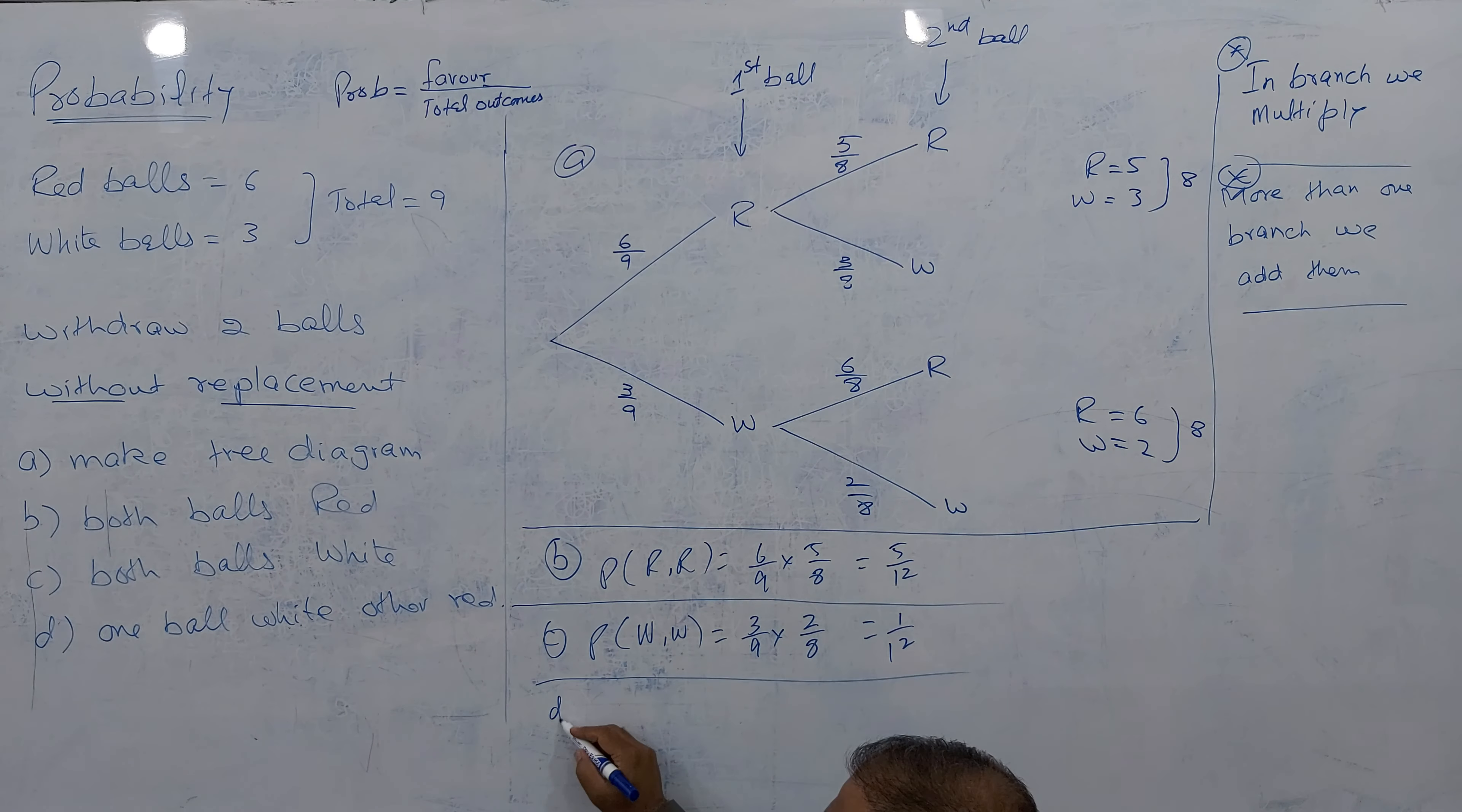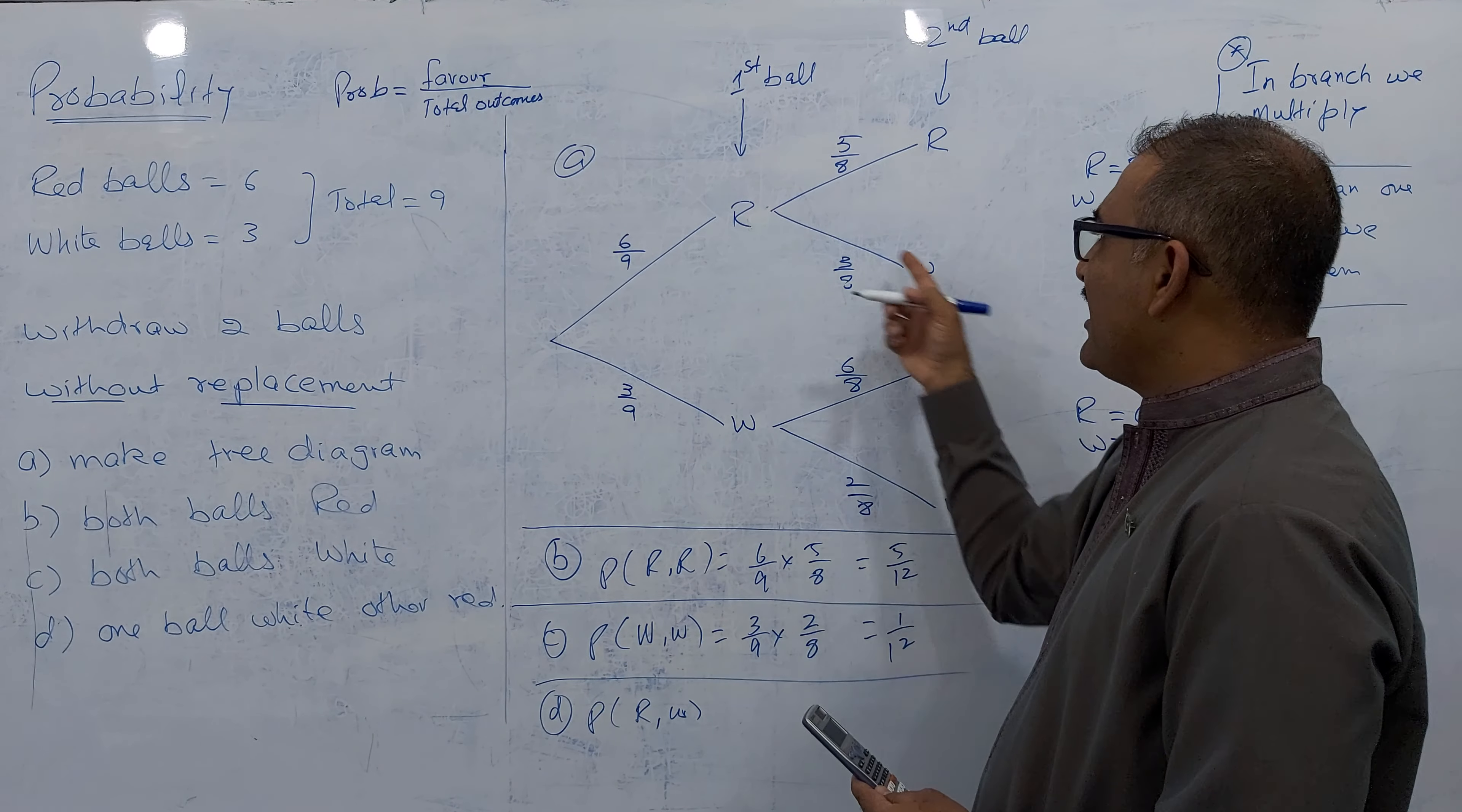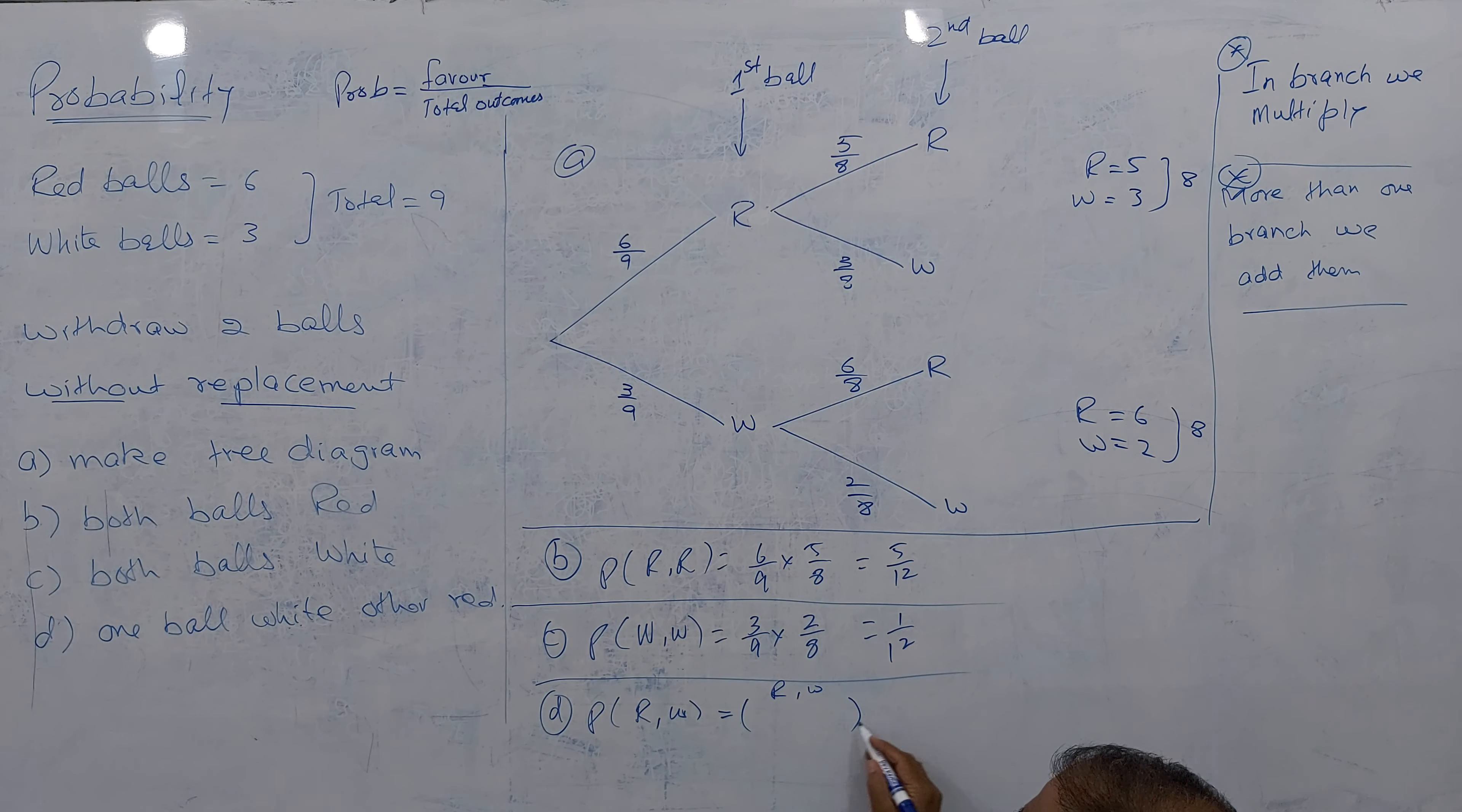Last part. He's asking one ball white, another red. It means red and white. I have two options: red and white, or maybe white and red. Because he said one ball white and the other is red. Two options: this branch and this branch. This into this and this into this, and both add. The way I'm doing here, red and white, first red, white, one option. Then white, red, second option. Here multiply, here multiply, but here plus.